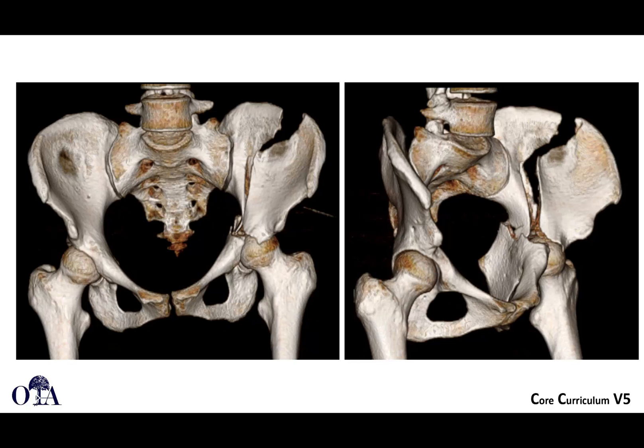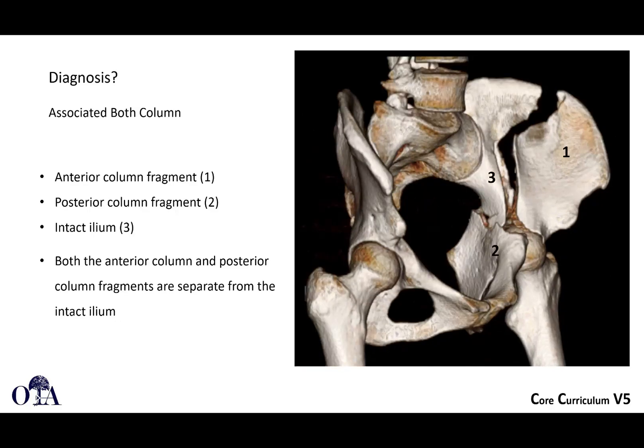Going through these images, you're probably dealing with a both-column acetabulum fracture, possibly anterior column posterior hemitransverse. There's wide displacement of the iliac wing involving the anterior column, quadrilateral plate involvement, and posterior column involvement. There's really no articular surface remaining on the sciatic buttress — a very classic appearance of an associated both-column fracture. The fragments are identified: anterior column fragment, posterior column fragment, and the sciatic buttress of the intact ilium. All fragments are separate from the intact ilium.